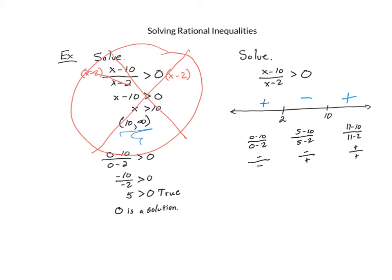We exclude 10 because it makes the numerator 0, and we want strictly positive values. We also exclude 2 because it makes the denominator 0. We want numbers that make the ratio positive: those to the left of 2 and to the right of 10. The solution in interval notation is negative infinity to 2, union 10 to infinity.